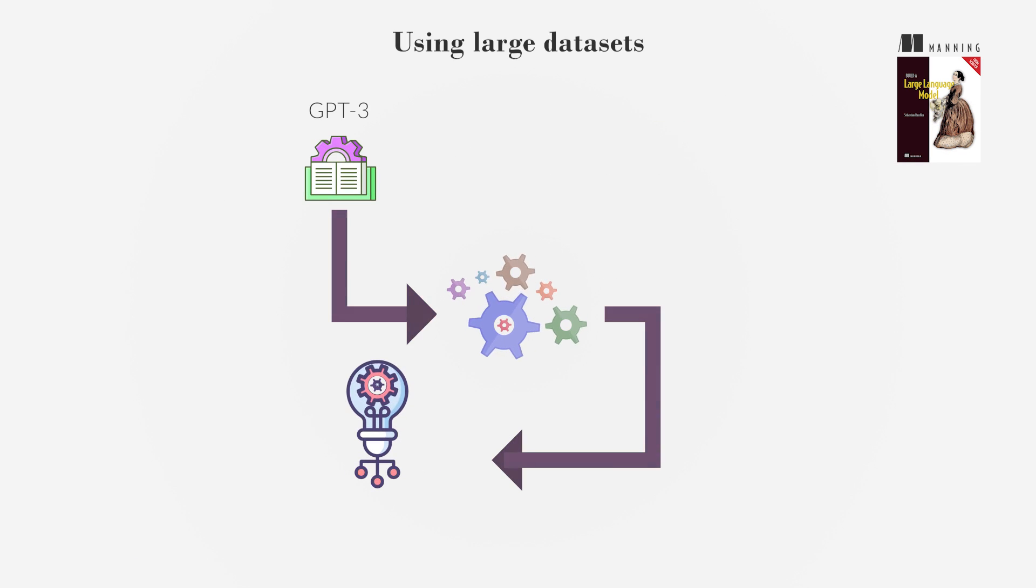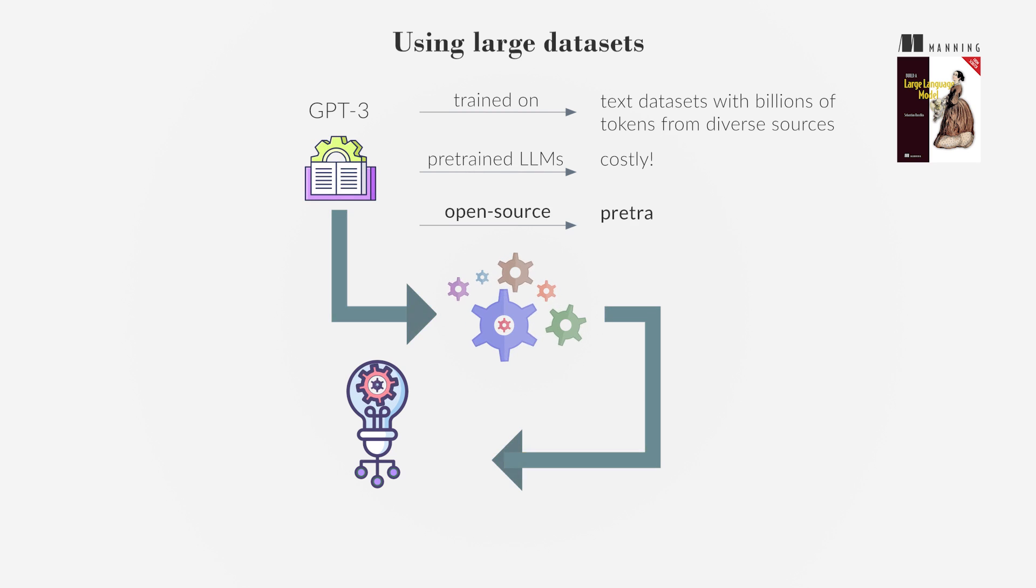Models like GPT-3 are trained on text datasets with billions of tokens from diverse sources. The breadth of training data enables these models to understand language structure and context. Pre-training LLMs is costly, but open-source pre-trained models are available for fine-tuning on specific tasks.